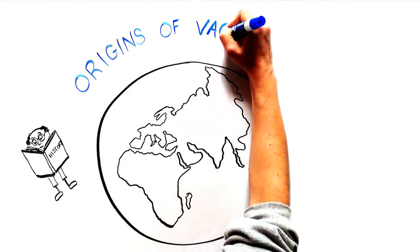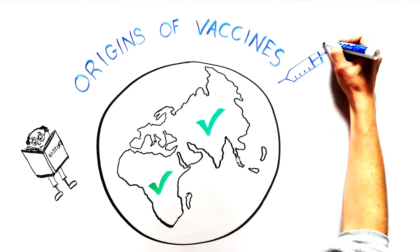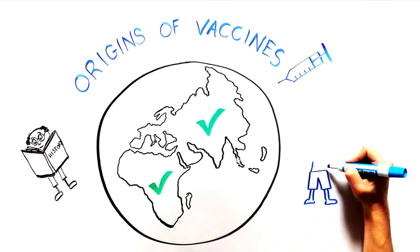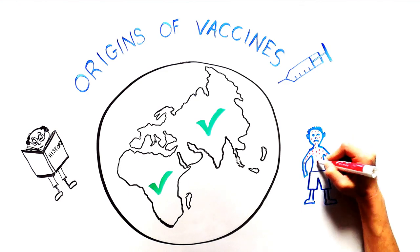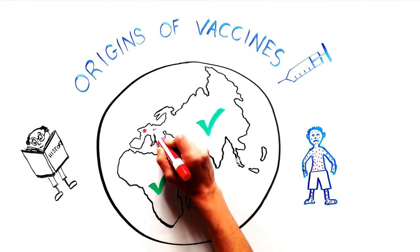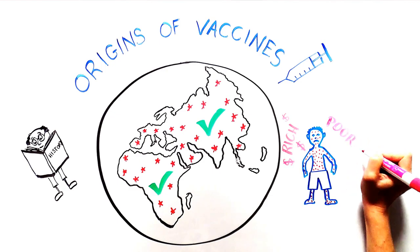Historians have found that the origin of vaccines goes back to ancient Asia and Africa. Early versions of what are now called vaccines are believed to have been discovered in response to a deadly disease known as smallpox, which was widespread across many cultures and countries and affected rich and poor people equally.